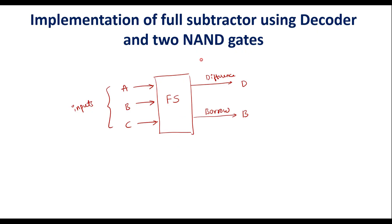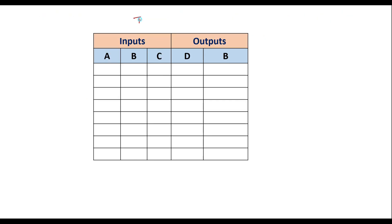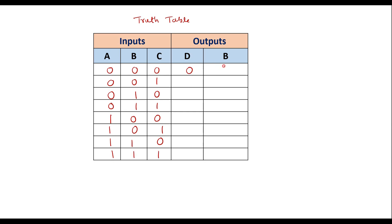To implement this, we first need to write the truth table. A, B, C are the inputs; D is the difference and B is the borrow output. Writing all possible inputs: 0,0,0 gives difference 0 and borrow 0. For 0,0,1: 0 minus 1 gives difference 1 and borrow 1. For 0,1,0: 1 minus 0 gives difference 1 and borrow 1.